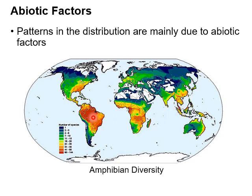The amount of rainfall and temperature has a really big effect on where you find things living. Abiotic factors are really, really important to living things.